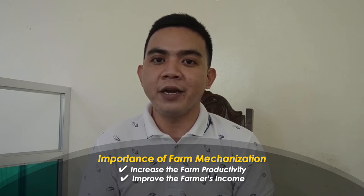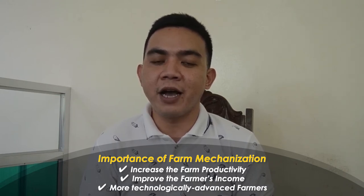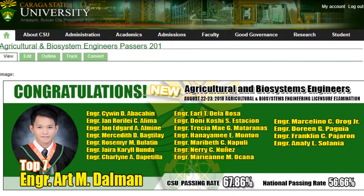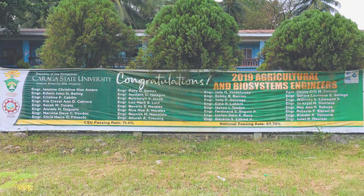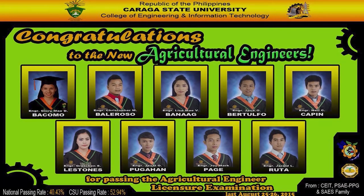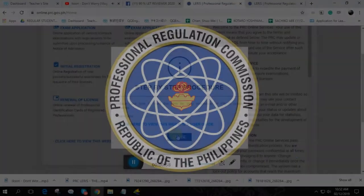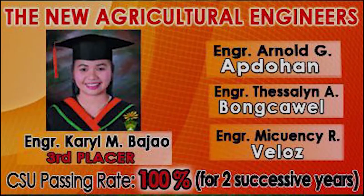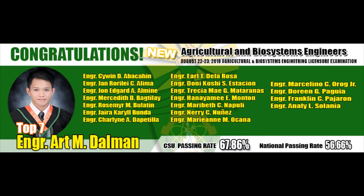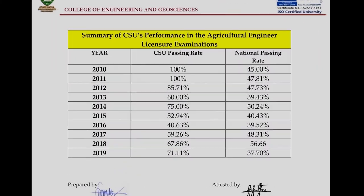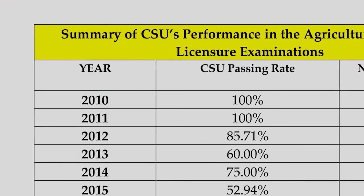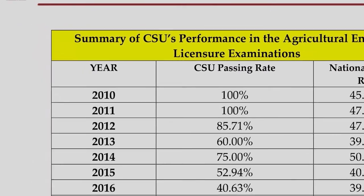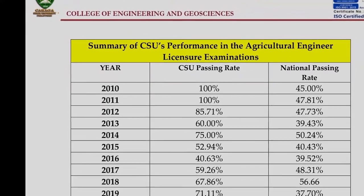That is why we are encouraging them to use farm machineries and equipment. From 2010 to 2019, a total of 140 licensed Agricultural and Biosystems Engineers was produced by the program, with two top-notchers recorded. Top 3 in year 2011 and Top 7 in year 2018. The program also recorded a consecutive 100% passing rate in the 2010 and 2011 licensure exams given by the Professional Regulation Commission.